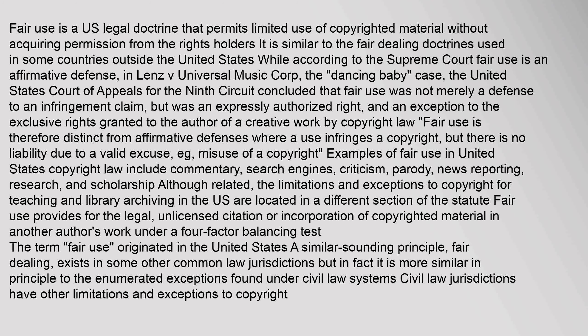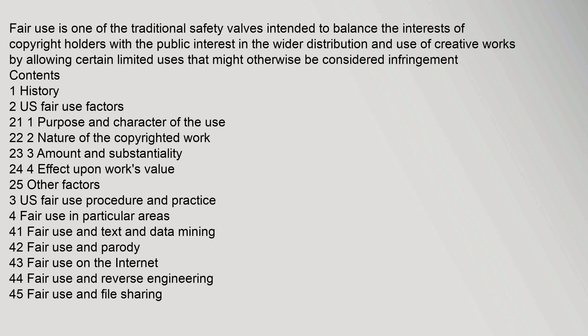Examples of fair use in United States copyright law include commentary, search engines, criticism, parody, news reporting, research, and scholarship. Although related, the limitations and exceptions to copyright for teaching and library archiving in the U.S. are located in a different section of the statute. Fair use provides for the legal, unlicensed citation or incorporation of copyrighted material in another author's work under a four-factor balancing test. The term fair use originated in the United States. A similar sounding principle, fair dealing, exists in some other common law jurisdictions, but in fact it is more similar in principle to the enumerated exceptions found under civil law systems. Fair use is one of the traditional safety valves intended to balance the interests of copyright holders with the public interest in the wider distribution and use of creative works.